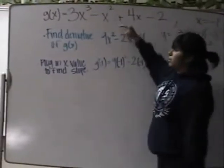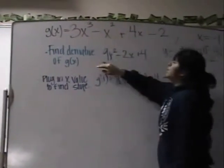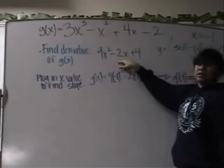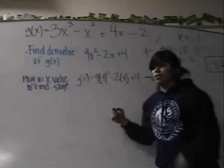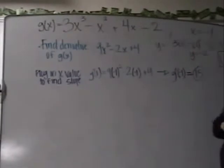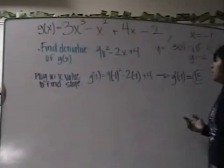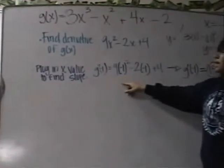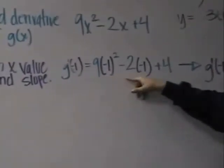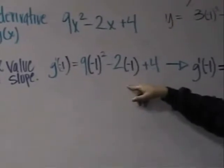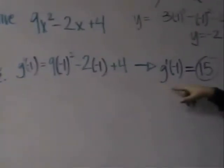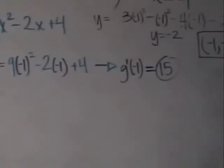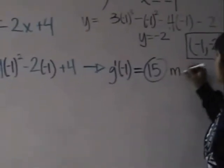Then I'm going to find the derivative of g(x). The derivative of g(x) is 9x squared minus 2x plus 4. Once I have my derivative, I can plug in my x values to find the slope of the tangent line. So I plug in negative 1 and I get g prime of negative 1 equals 9 times negative 1 squared minus 2 times negative 1 plus 4. This gives me a slope of 15. So this is my slope of my tangent line.